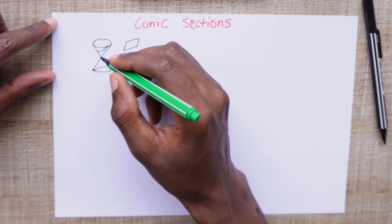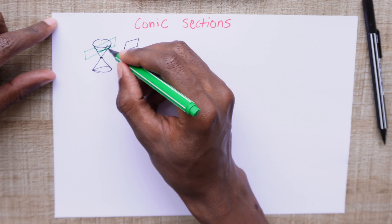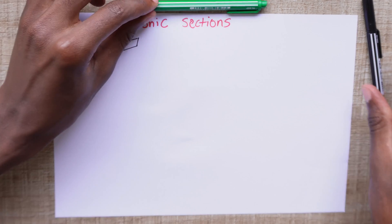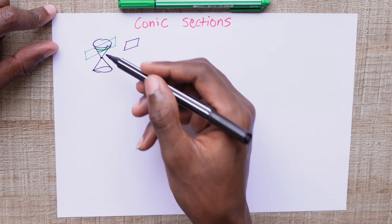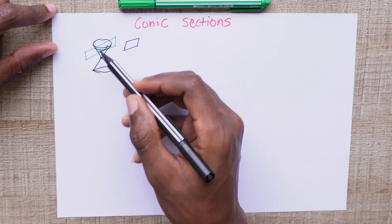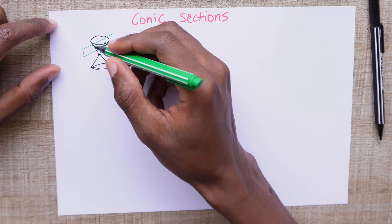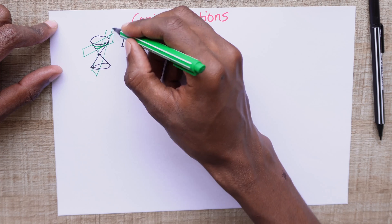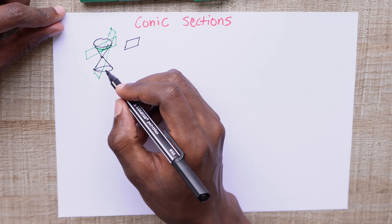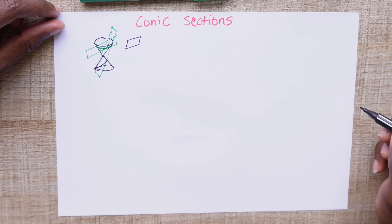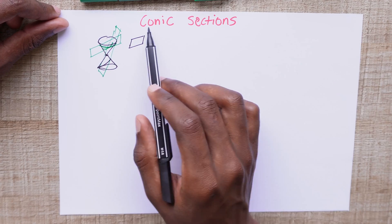The curves that you can have from this intersection is what is known as a conic section. So the curves defined by the intersection of this plane and this cone — in this case I just cut across the upper cone, but you could be cutting both cones. The curves that are defined in each case by the intersection of this plane and the cone is what is known as a conic section.